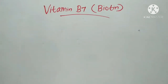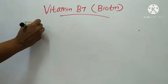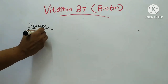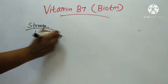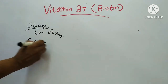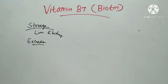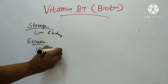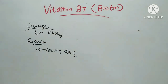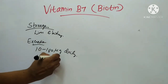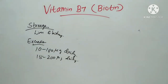Regarding biosynthesis, biotin can be synthesized by many bacteria, yeast, fungi, and higher plants. For storage, it can be stored in the liver and kidneys. Regarding excretion, it is excreted in urine, feces, and milk. Normal adults on an adequate diet excrete 10 to 180 micrograms daily in urine and 15 to 200 micrograms daily in feces. Fecal excretion represents unabsorbed biotin synthesized by the intestinal bacteria.